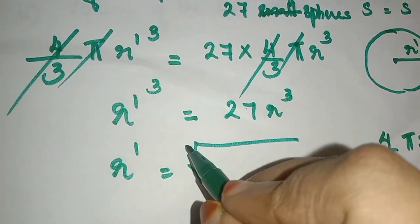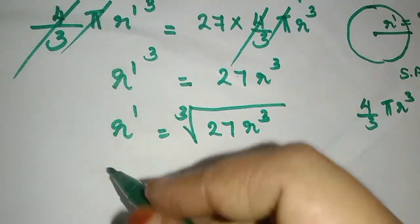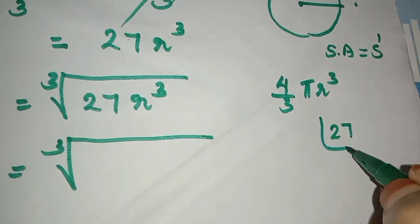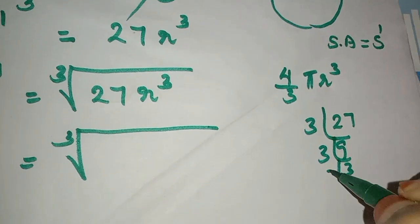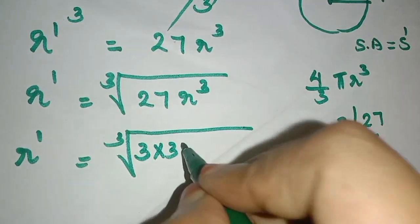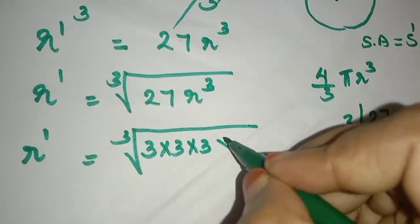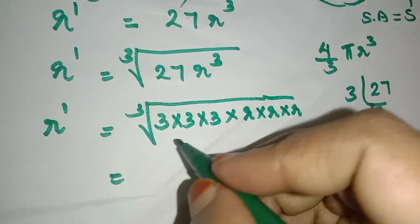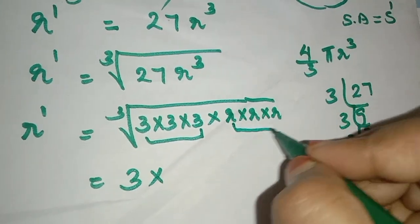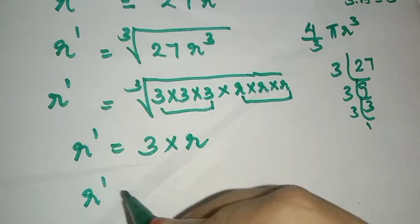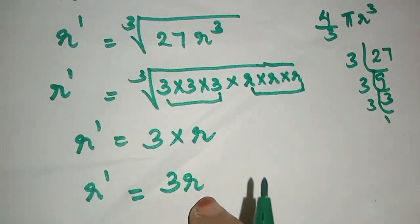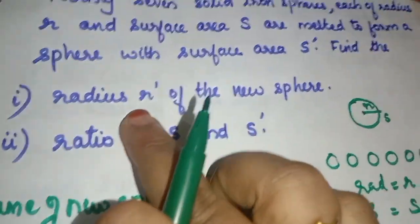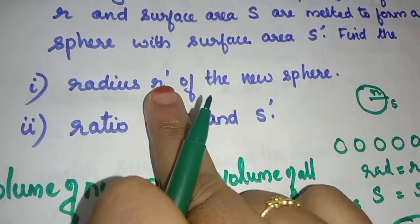R' is equal to cube root of 27 R cube. The factors of 27 — by prime factorization, 27 is 3 cubed. So cube root of 27 is 3. Therefore R' is equal to 3r. We have found the radius R' of the new sphere.